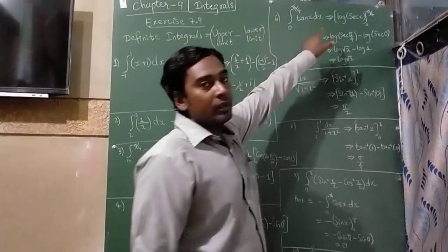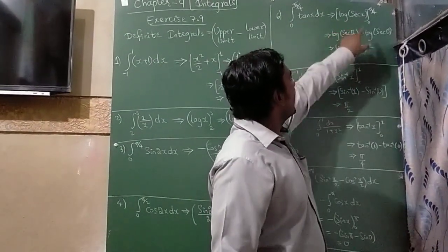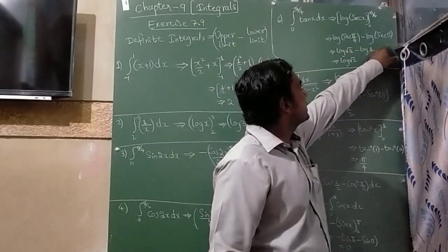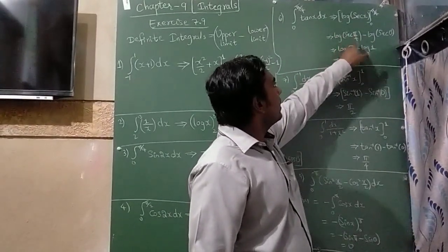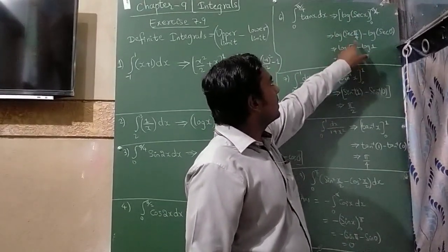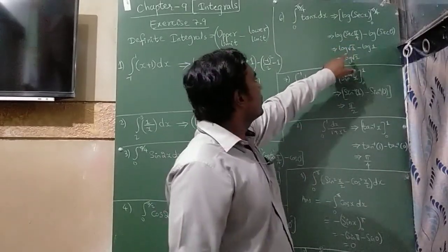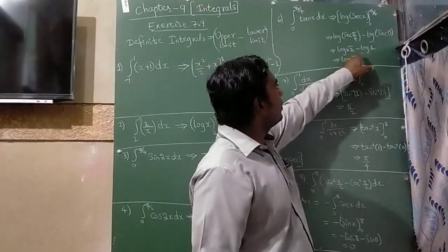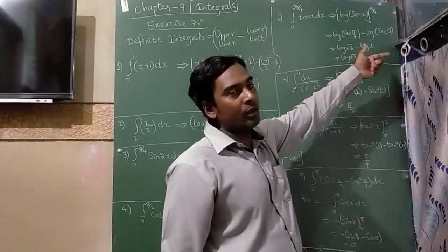The sixth question is integration of tan x dx with limits 0 to π/4. The integral of tan x is log(sec x). The upper limit is π/4, which is 45 degrees, and sec 45° = √2. So we get log √2 minus log 1. Since log 1 = 0, the final answer is log √2.